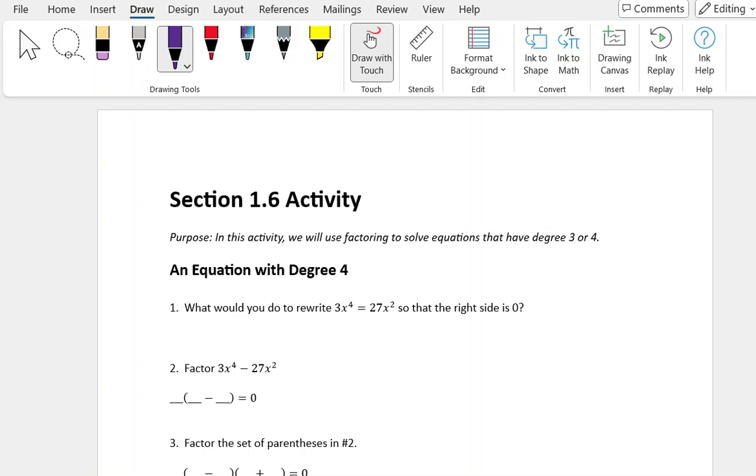In this video for section 1.6, we're going to talk about how to solve an equation with degree 4. Degree 4 means that 4 is the largest exponent in our polynomial. So here's what we're looking at: 3x to the fourth equals 27x squared.